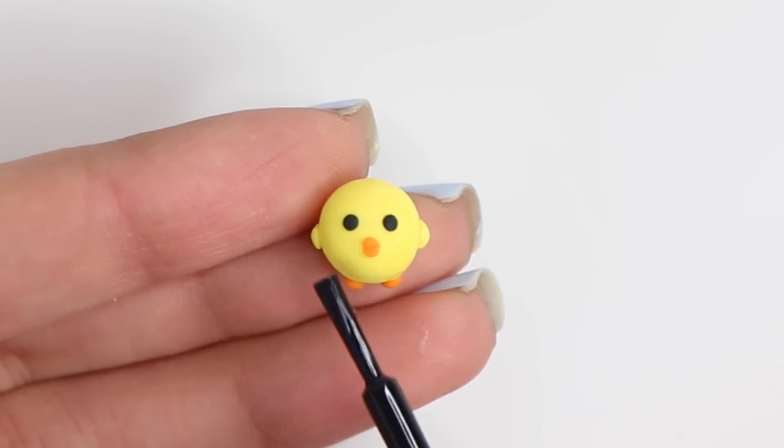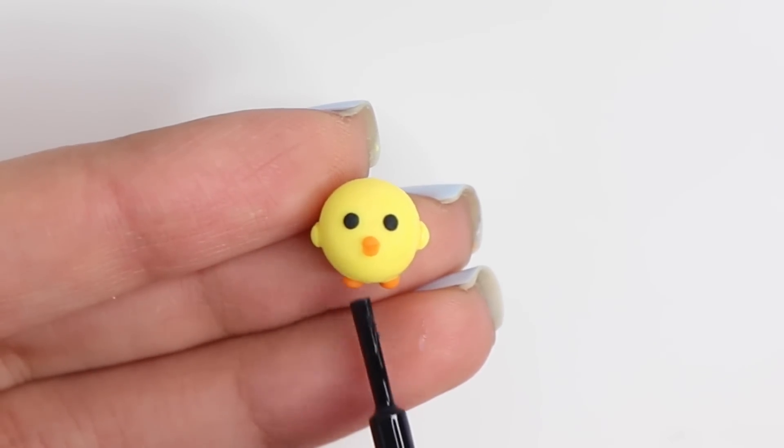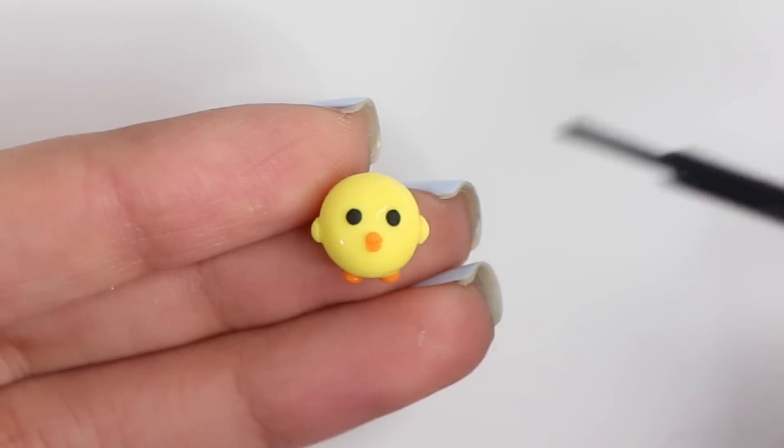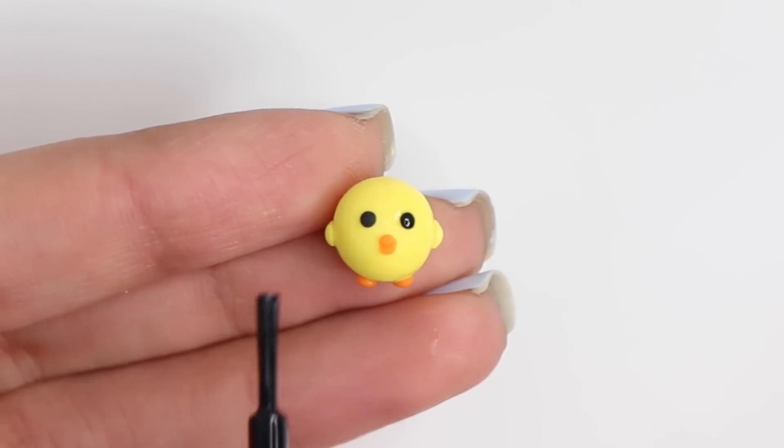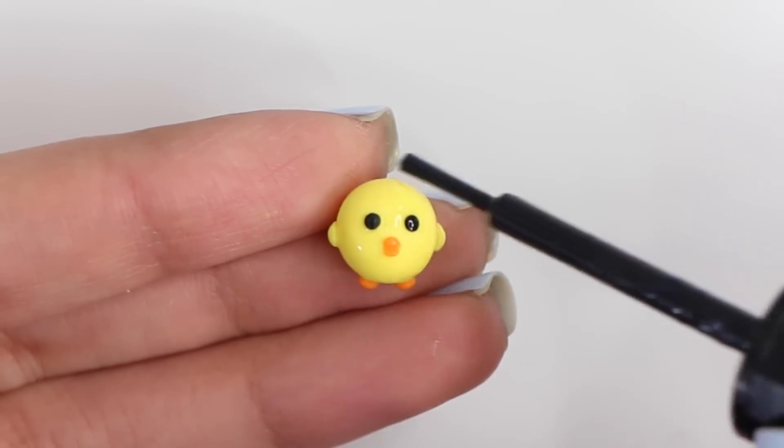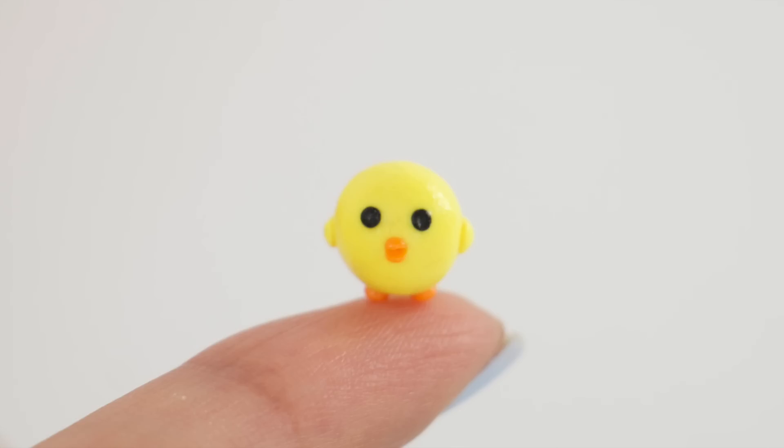And then I'm going in and glazing little Bob with Fimo gloss varnish and that's pretty much it for today's video. It was super quick and easy. So I hope you guys enjoyed watching it and if you did then don't forget to give it a thumbs up. And I hope you guys are having an amazing day and I'll catch you guys very soon.